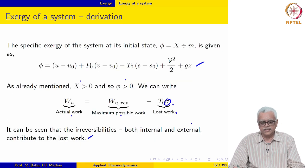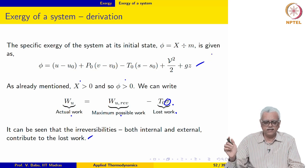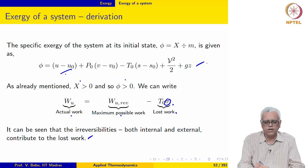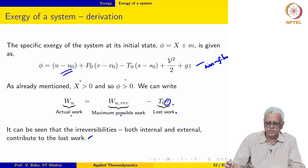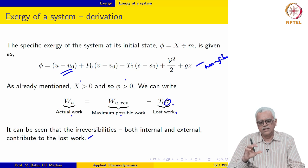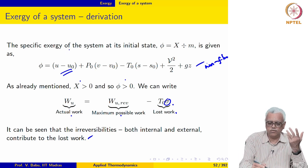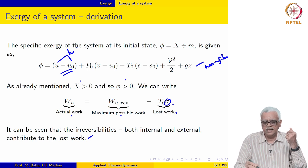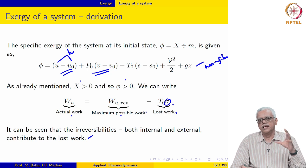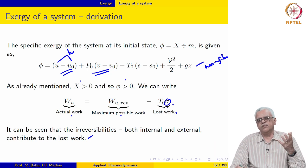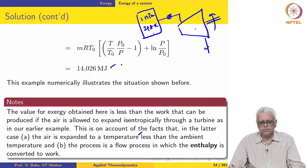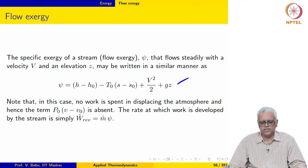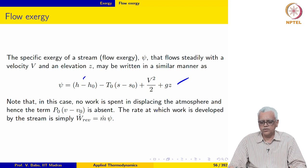Let us develop some more perspectives on exergy. We will write down, without deriving, a similar expression for flow exergy. This is for a non-flow process — you must keep that in mind. For a flow process the development is almost identical. In a flow process, instead of specific internal energy you encounter specific enthalpy, and the P0(V minus V naught) term is absent because in a flow process there is no displacement of the atmosphere.